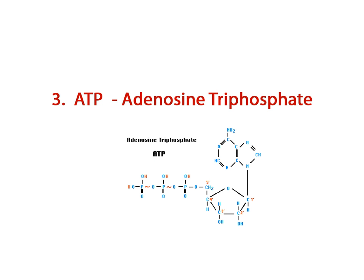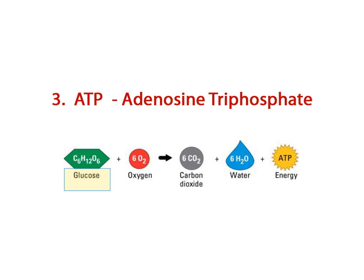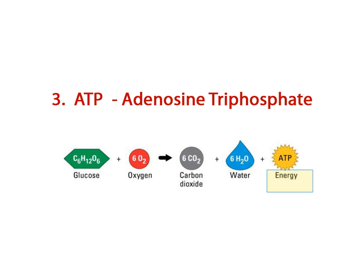ATP is made in an organelle in the cell called the mitochondria. This process is referred to as cellular respiration, and it occurs within the membrane of the mitochondria called the cristae. Essentially, a glucose molecule and oxygen react to produce carbon dioxide, water, and ATP. The formula for this reaction looks like this, and you should be familiar with this equation.